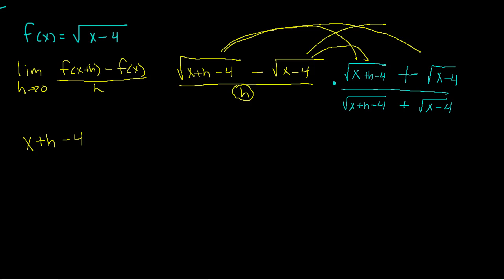There's one more thing left: the square root of x minus 4 times the square root of x minus 4. Be very careful — this is a major misstep alert. The square root of x minus 4 times the square root of x minus 4 is x minus 4, since square roots cancel. But there's a negative, so the negative has to get distributed, giving negative x plus 4, all divided by h. That negative sign is going to jump in and make it negative x plus 4.